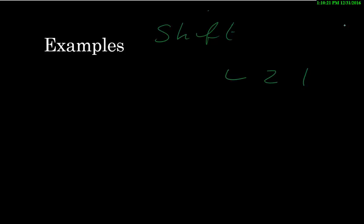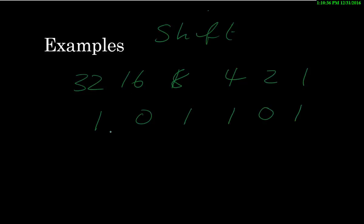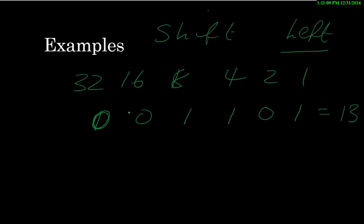Now let's look at other operations on data using binary. I'll put the values above so you can follow the maths. Picking some random values: one plus four plus eight equals 13. If we shift this left by one, we move all values by one position. We end up with two plus eight plus sixteen, which is 26. You can see that a left shift has caused the number to multiply by two.